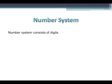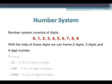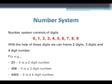The number system consists of digits 0 to 9, and using these digits we can form 2, 3, and 4 digit numbers. Let's see some examples. 23 is a 2 digit number as it contains 2 digits. 456 contains 3 digits so it is a 3 digit number. 4483 contains 4 digits so it is a 4 digit number.